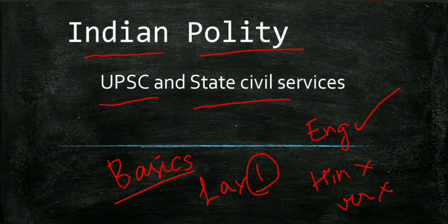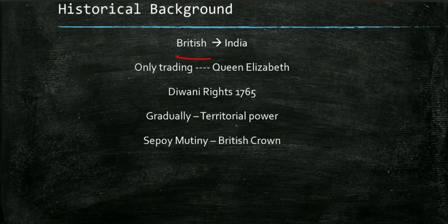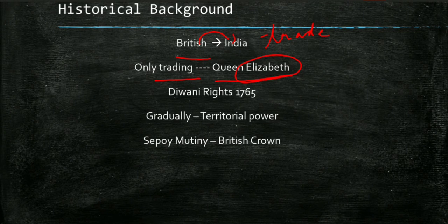First, historical background. Even though India got its independence and its own constitution, we had our own influence from the British. British came to India as a trading partner — they came for trading purposes. Their trading rights were given by Queen Elizabeth. Because of these trading rights, the British came to India and started trading.